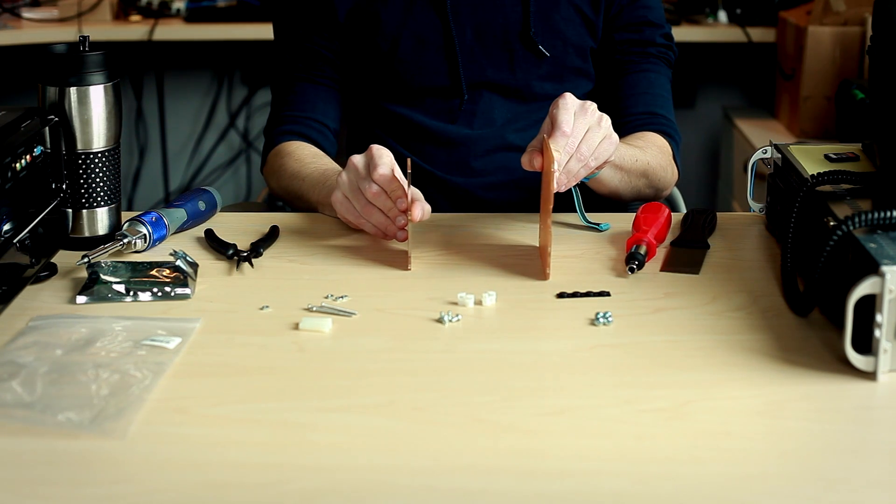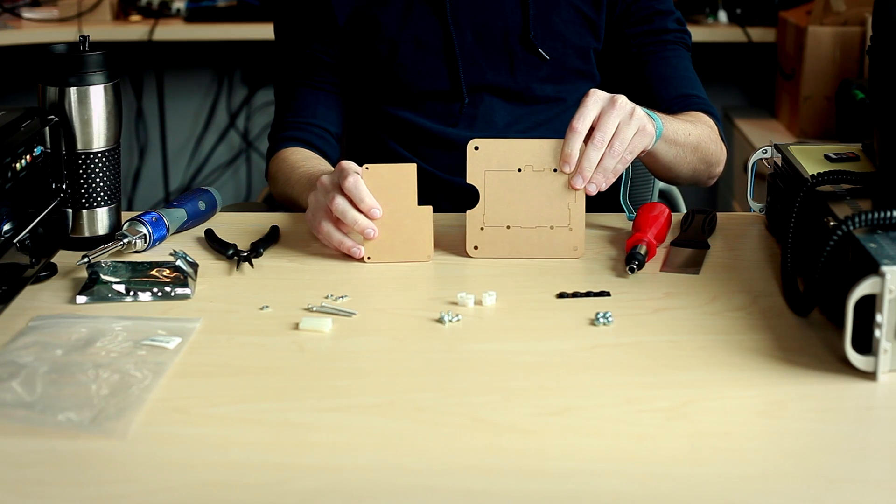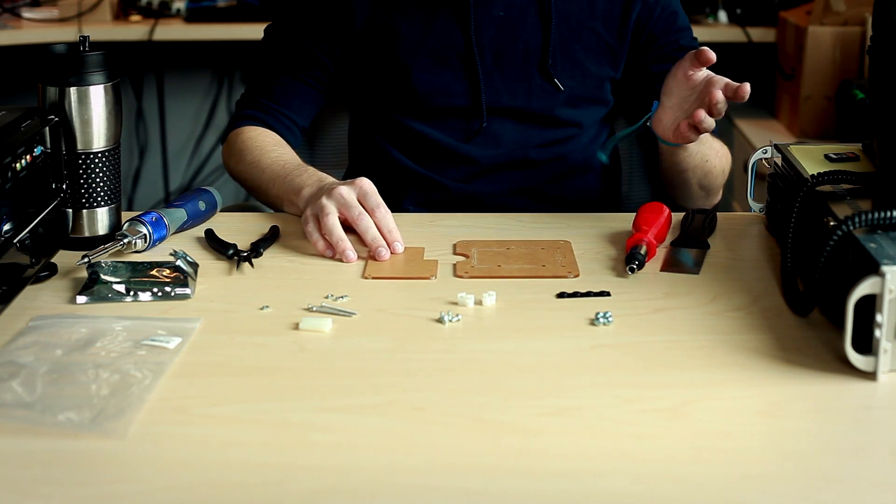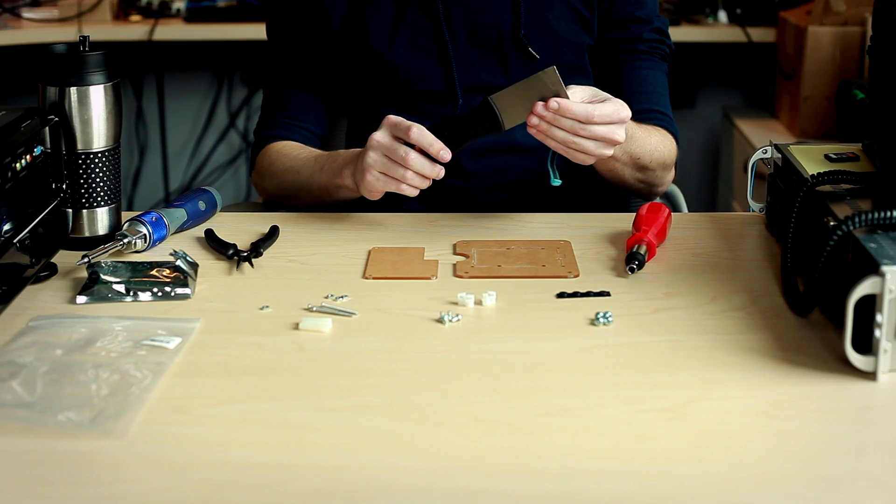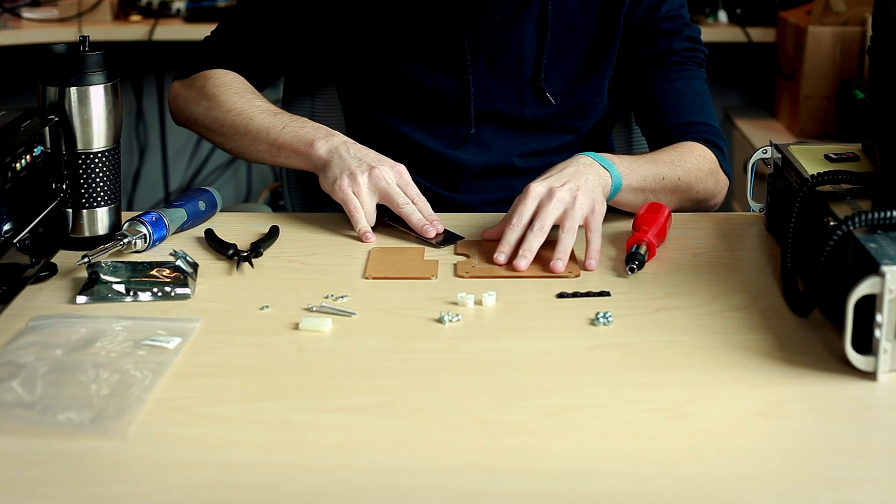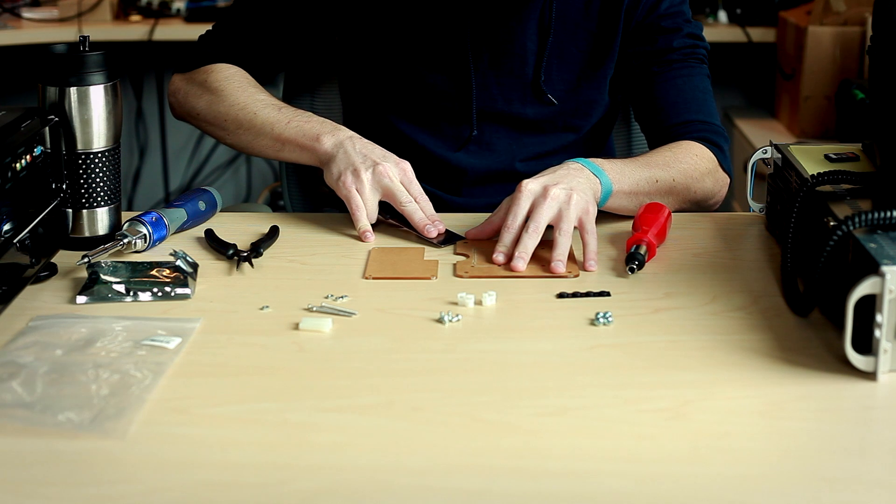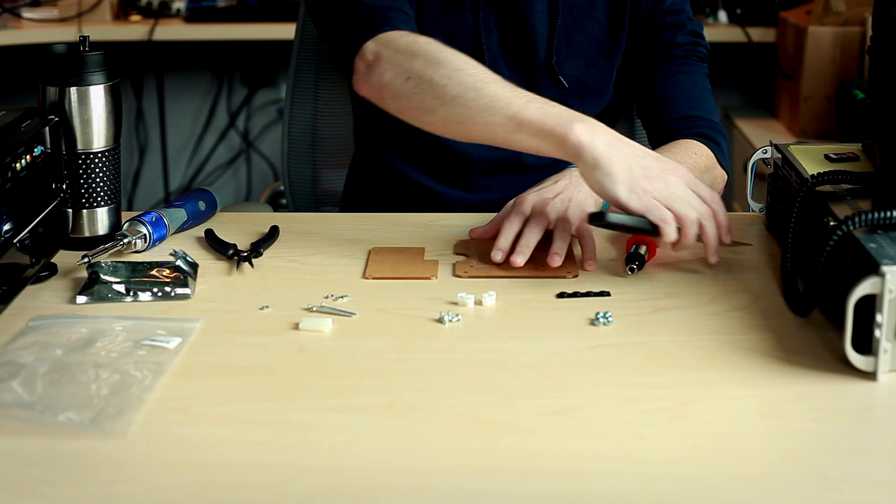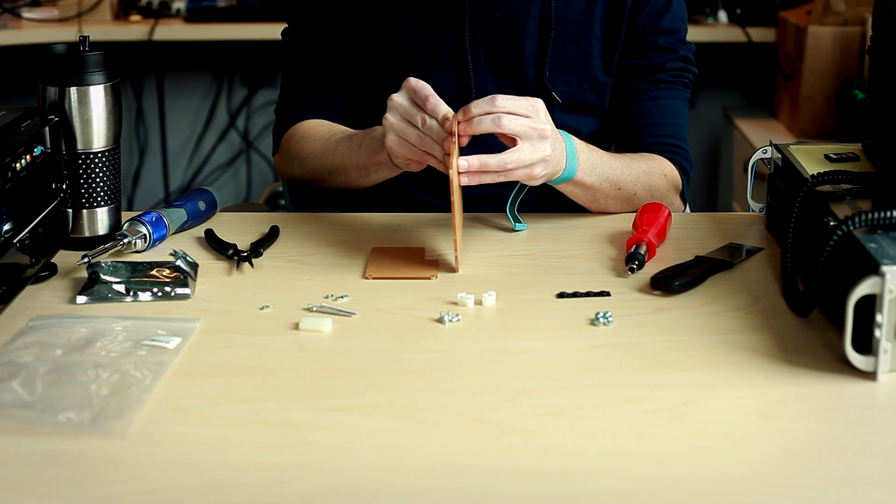The two plastic pieces are actually coated in this paper stuff. If you want, you can leave it on. I like to take it off for cosmetic reasons. So that's where this little paint scraper comes in handy. I just start at one corner, just try and scrape a little bit off, and then from there you should be able to peel it the rest of the way.